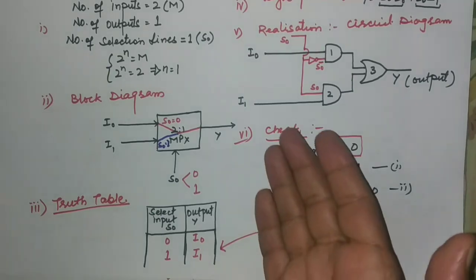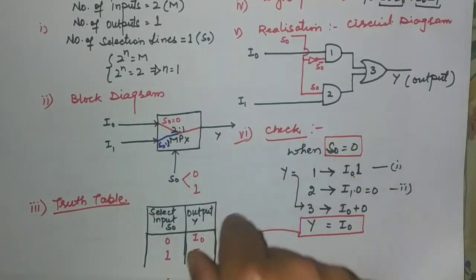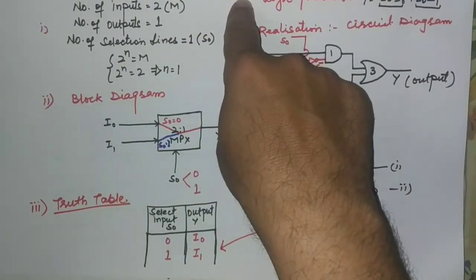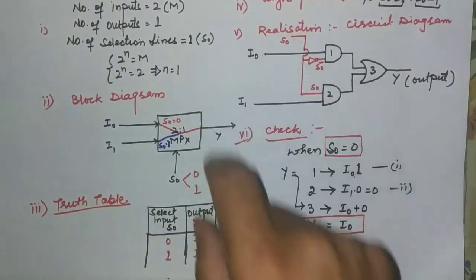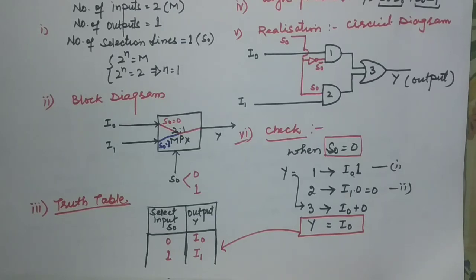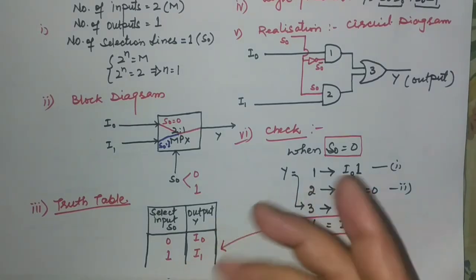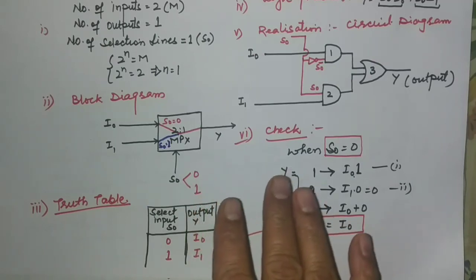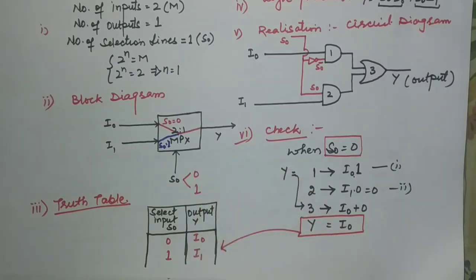In the next lecture, we can also implement this 2-to-1 multiplexer for designing OR and NOT gates — meaning we can use the 2-to-1 multiplexer for the realization of basic logic gates. Thank you very much.